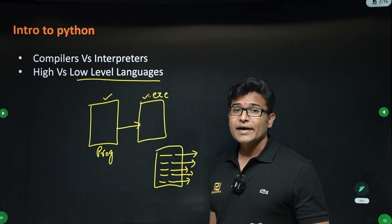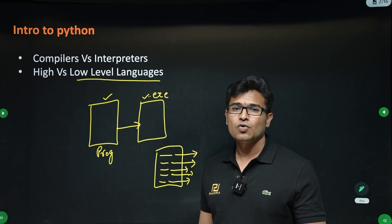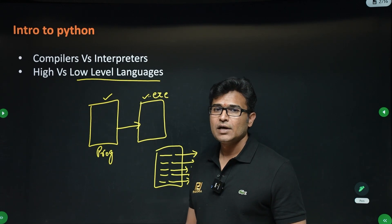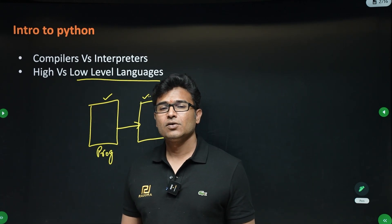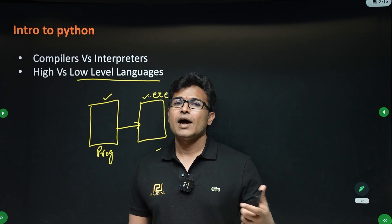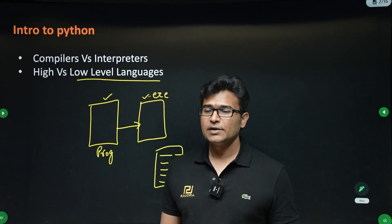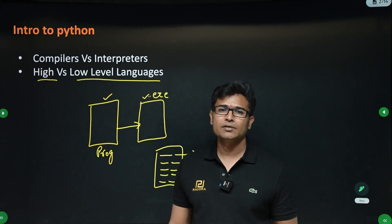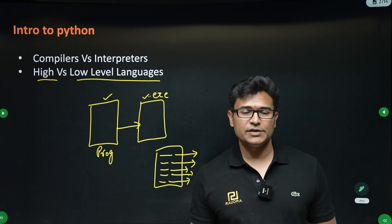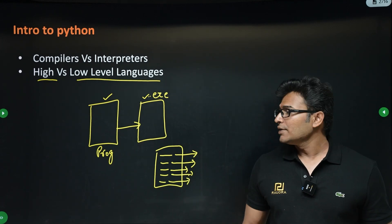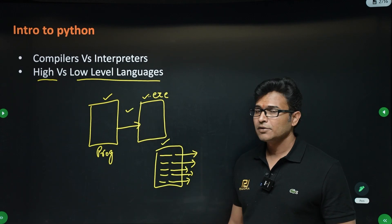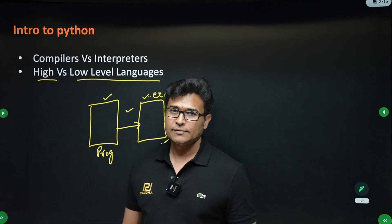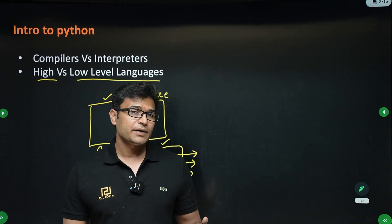Low level languages include assembly language, bytecode, and machine language. Low level language means it will be in zeros and ones — computers can only understand low level language; they cannot understand high level English-like language. High level languages include C, C++, Java, Python, and JavaScript. We use either a compiler or an interpreter to convert high level language into low level language.